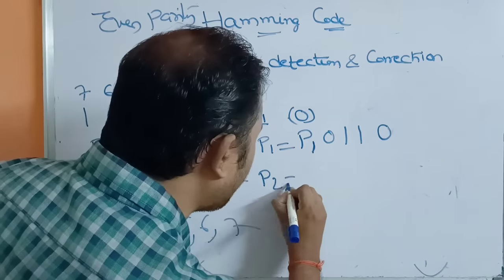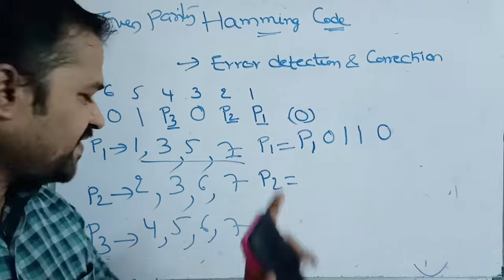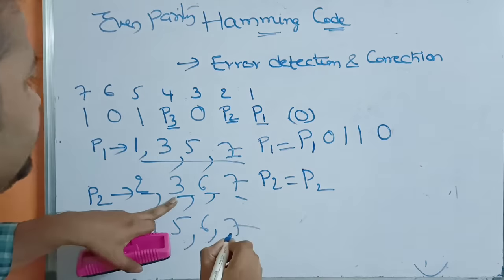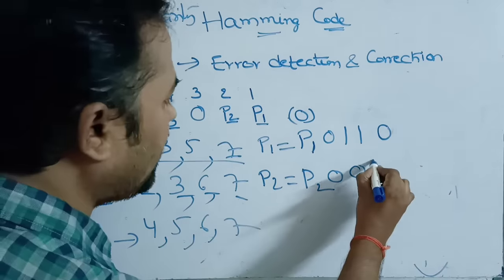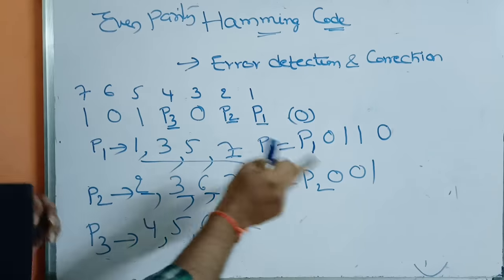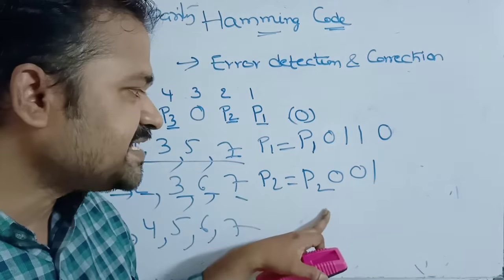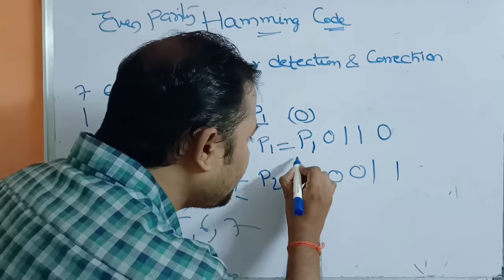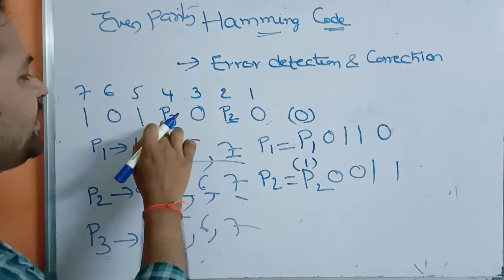Now let us check P2. We look at positions 2, 3, 6, 7. At position 2 we have P2; at position 3 we have 0; at position 6 we have 0; at position 7 we have 1. There is only one 1, which is odd, so we need to add one more 1 to make it even. Therefore, P2 = 1.